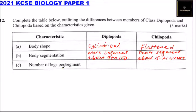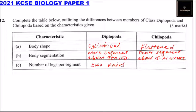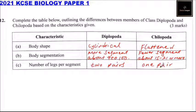In terms of number of legs per segment, Diplopoda has two pairs — that means four legs per segment. Chilopoda has one pair, meaning two legs per segment. That's how you answer that question.